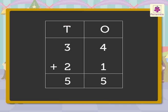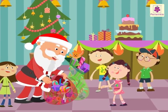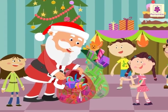Hence, we get the number 55. We say the sum of 34 and 21 is 55. There are 55 gifts in all.